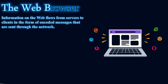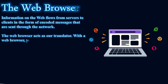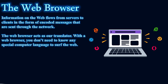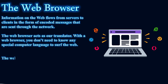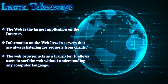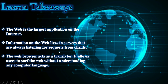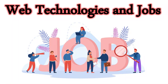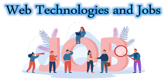Information on the web flows from servers to clients in the form of encoded messages sent through the network. The web browser acts as our translator — with a web browser, you don't need to know any special computer language to surf the web. The web browser is a software application that provides a graphical interface for accessing the web. Lesson takeaways: the web is the largest application on the internet; information on the web lives in servers that listen for requests from clients; and the web browser acts as a translator, allowing users to surf the web without understanding any computer languages.